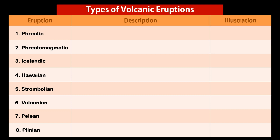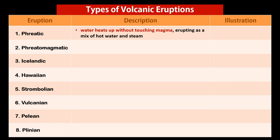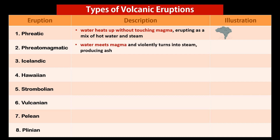Phreatic eruptions happen when water heats up without touching magma, erupting as a mix of hot water and steam. Phreatomagmatic eruptions occur when water meets magma and violently turns into steam, producing ash.